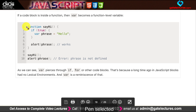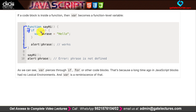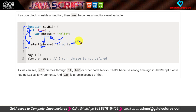To illustrate further: in a function 'sayHi', if condition is true, we declare a var variable called 'phrase' with value 'hello'. Even if we try to access 'phrase' outside the if block but inside the function, it is accessible and will print 'hello'. However, if we try to access it outside the function entirely, it will not be available.